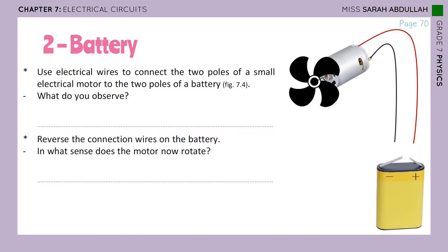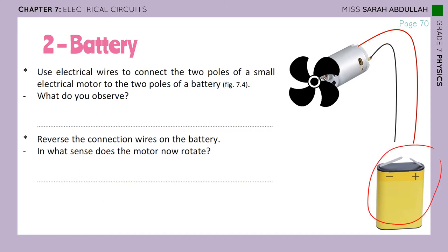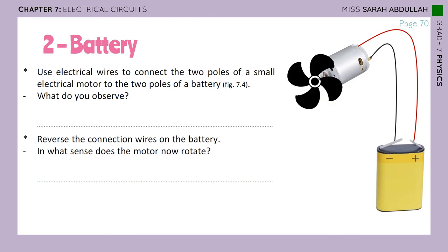A battery has two poles, the positive and the negative — whether it's a square battery or a round battery. Now, use electrical wires to connect the two poles of a small electrical motor to the two poles of the battery. This is an electrical motor with a little fan connected to it. Once we connect it to the battery, it will start rotating.